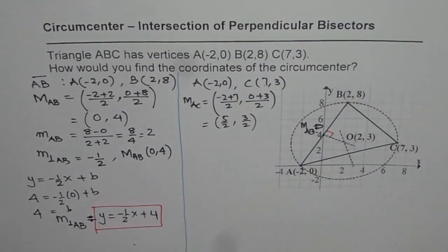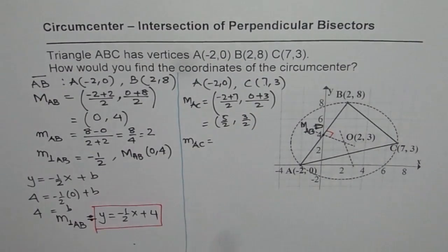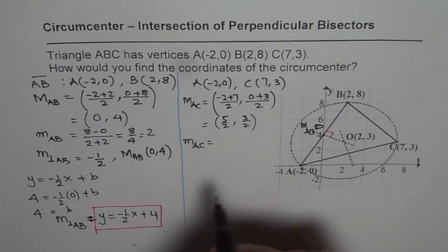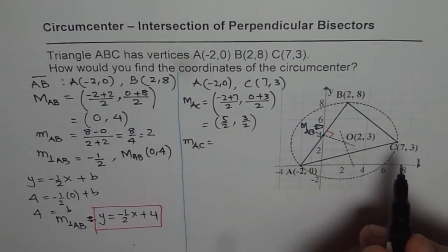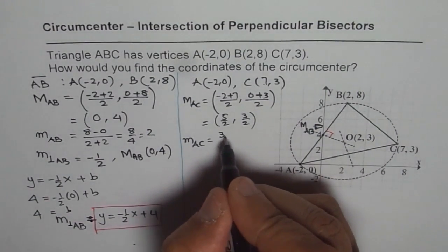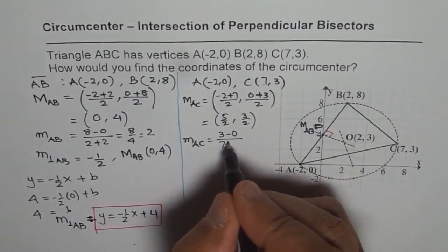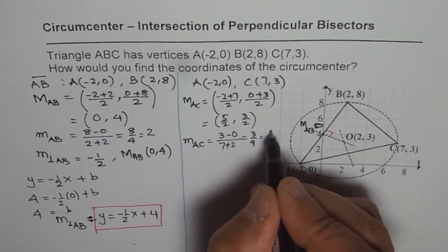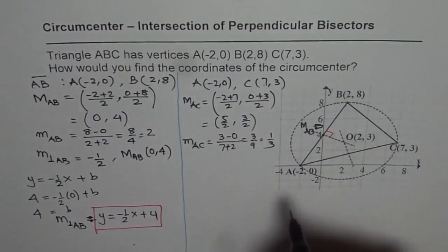Now let's find the slope of AC. Slope = (Y2 − Y1) / (X2 − X1) = (3 − 0) / (7 − (−2)) = 3 / 9 = 1/3. So the slope of AC is 1/3.